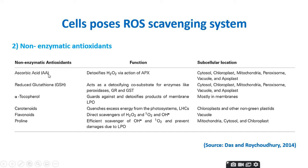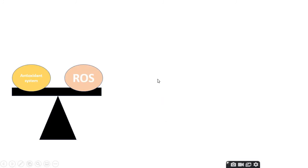The second category is non-enzymatic antioxidants, such as ascorbic acid, reduced glutathione, tocopherol, carotenoids, flavonoids, phenols, and proline. Proline is an amino acid also involved in reducing reactive oxygen species. Normally, cells maintain reactive oxygen species and the antioxidant system at a balanced level.